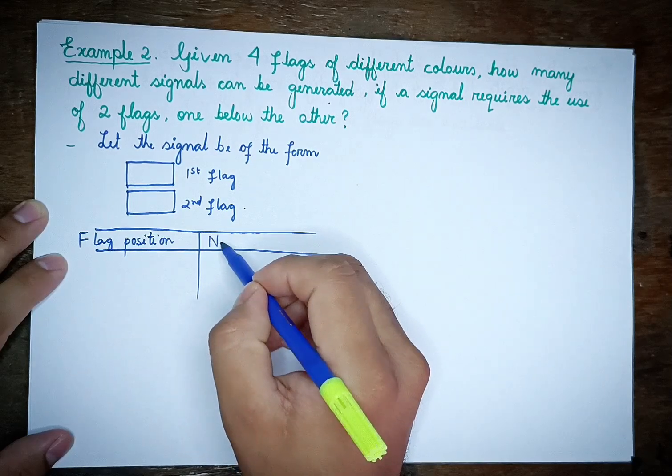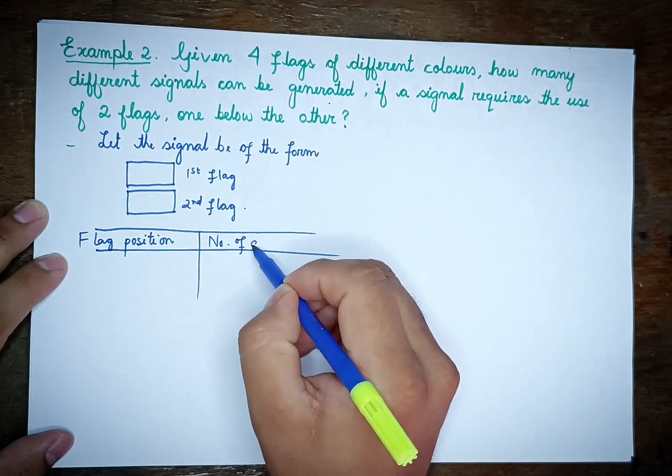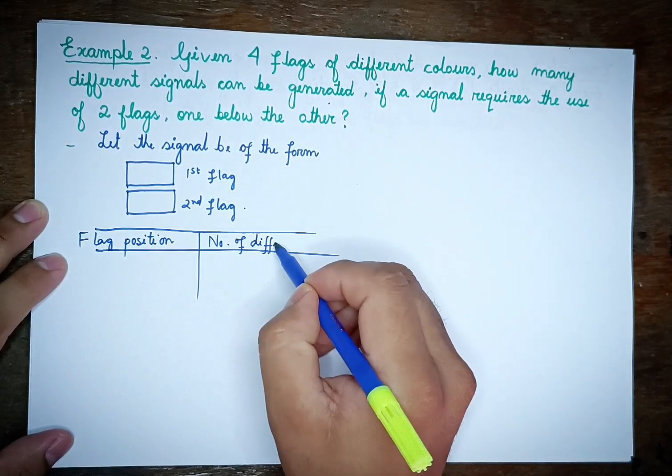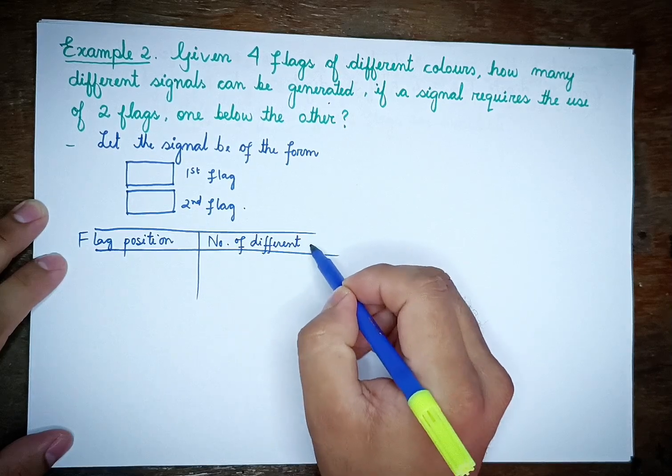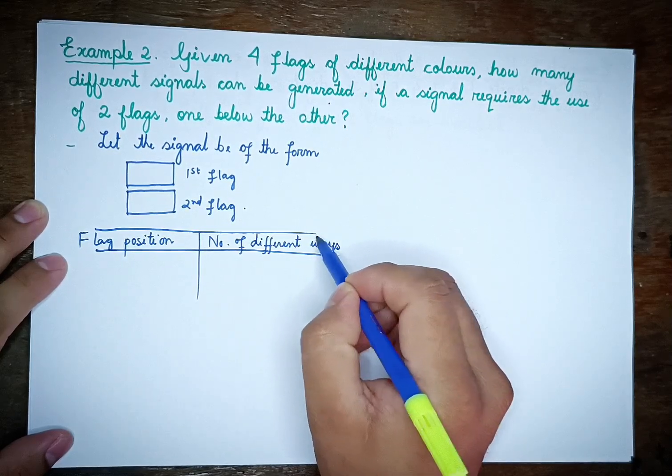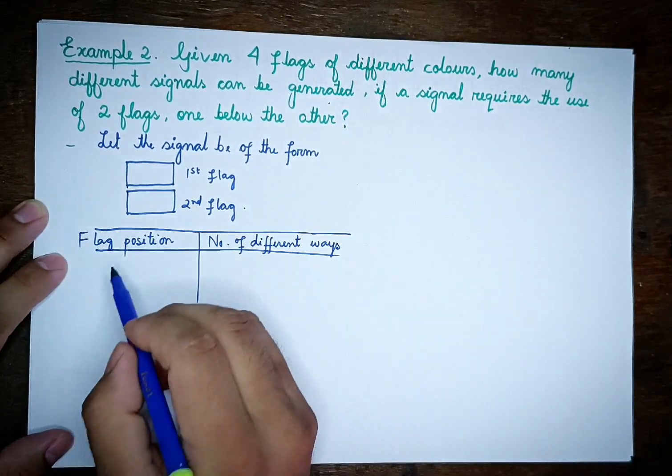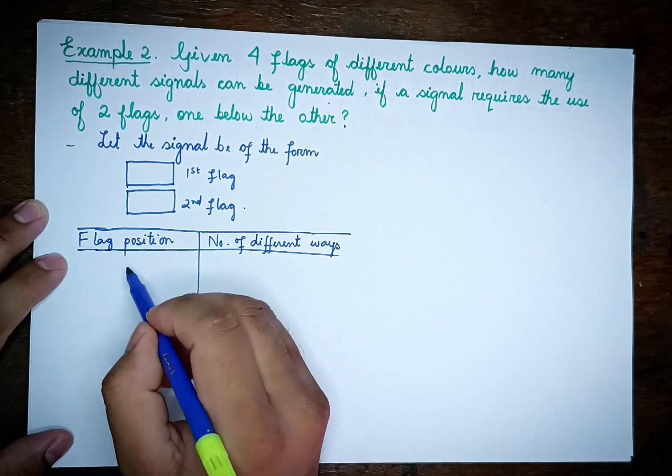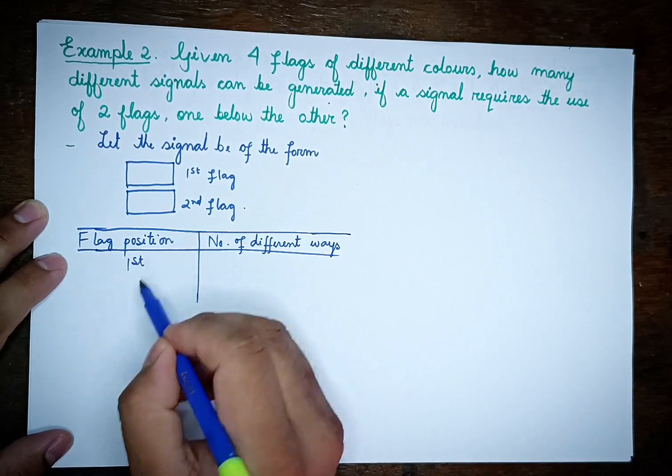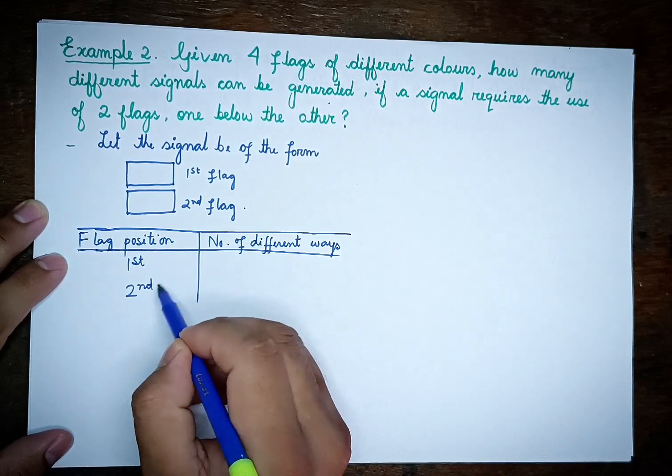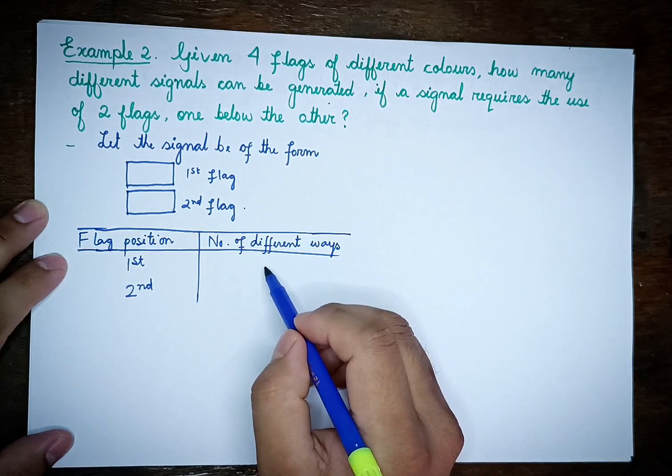For the number of different ways: flag position number 1 first, flag position number 2 second.